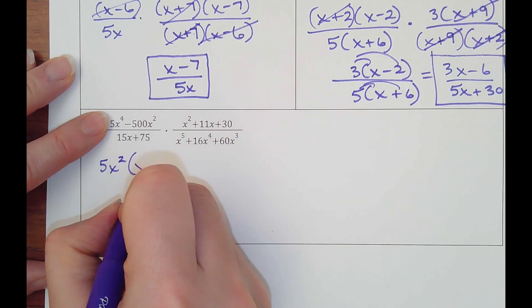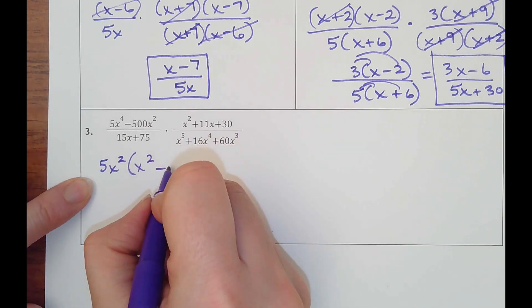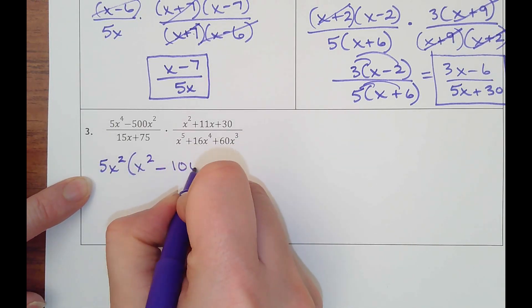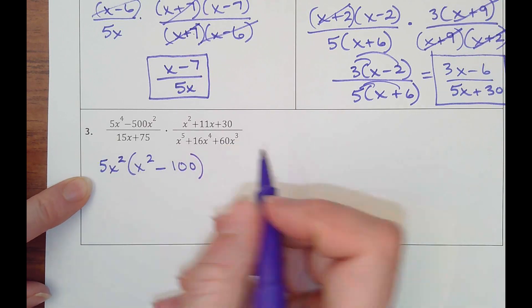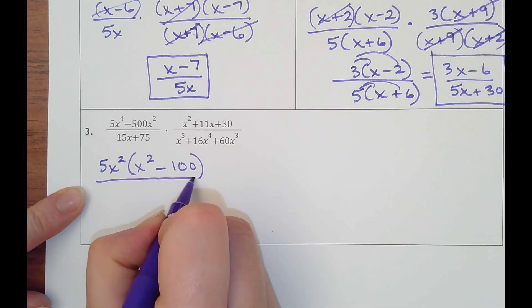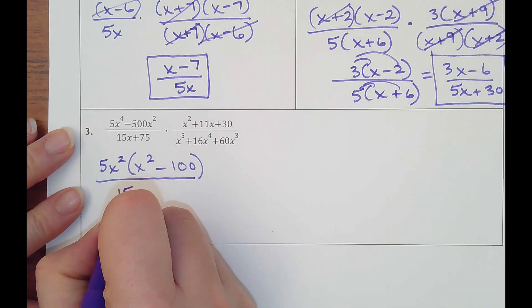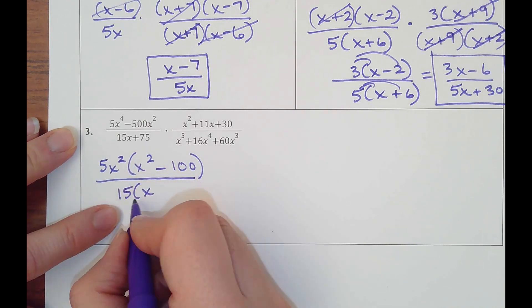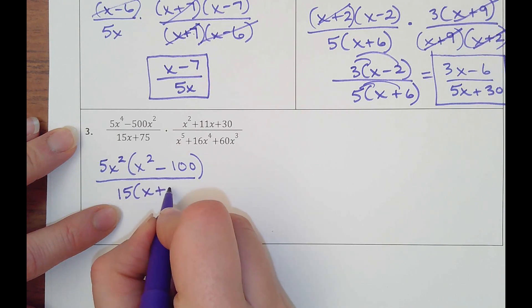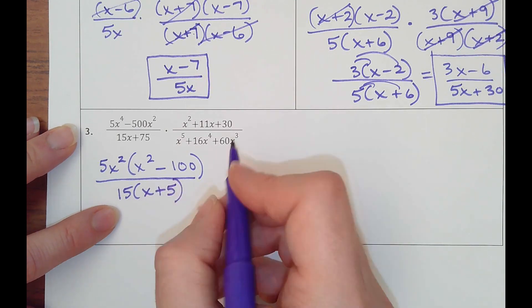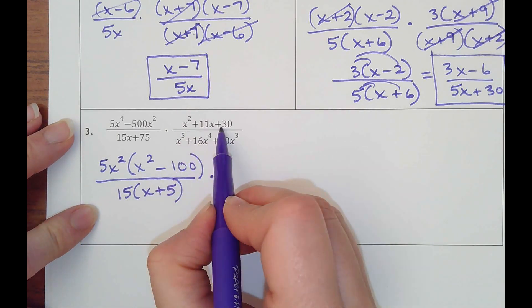So that would leave me with an x squared minus 100. And that's going to have to be factored again here in a minute. On the bottom, I can take out a 15. I know 4 times 15 is 60, so 15 times 5 would be 75. Okay, and then I have a basic trinomial.